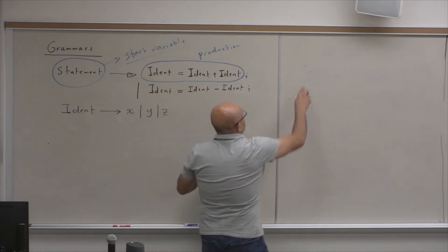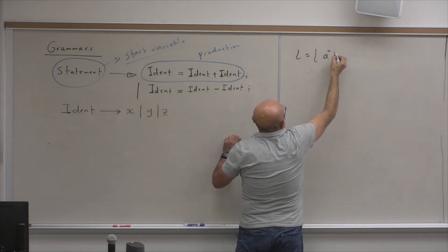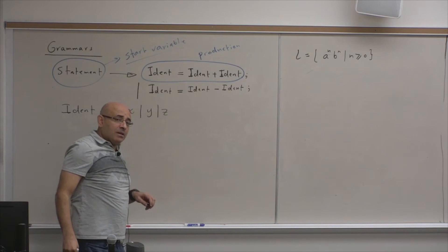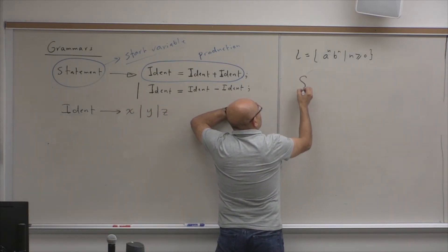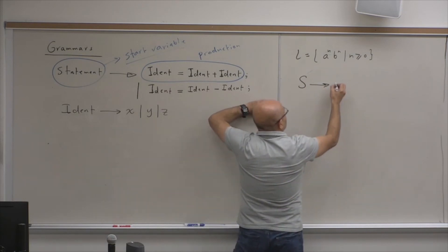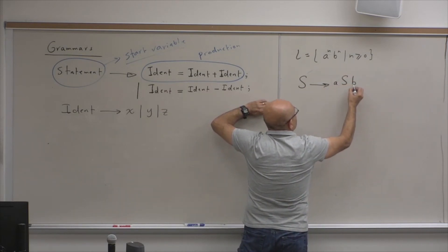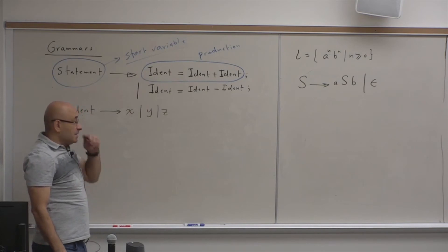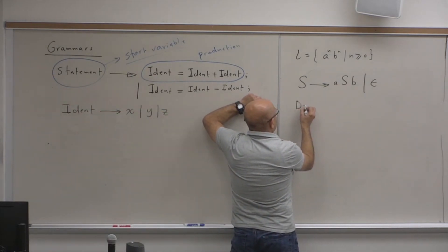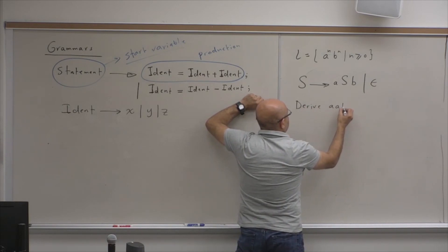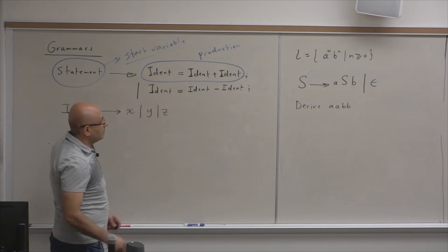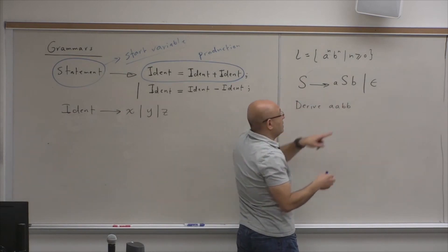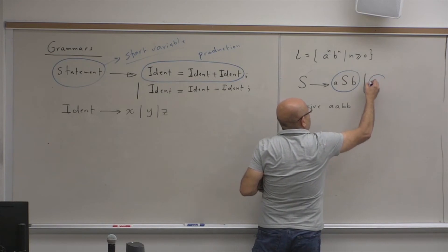What about this language? L = { a^n b^n | n ≥ 0 }. This language can be generated using the following grammar. This is the start symbol: S → aSb or epsilon. How can we use this to derive strings? Let's do one derivation — let's derive the string aabb. We have two productions here: production one is S → aSb, and production two is S → epsilon. Two alternatives. Everything uppercase is a variable or non-terminal, and everything lowercase is a terminal.